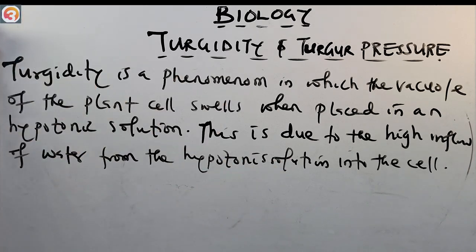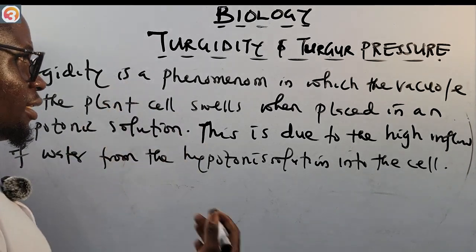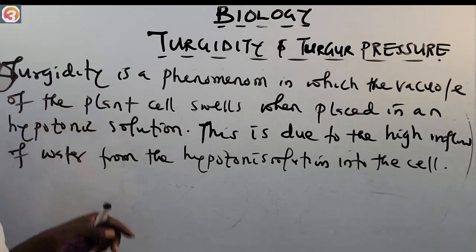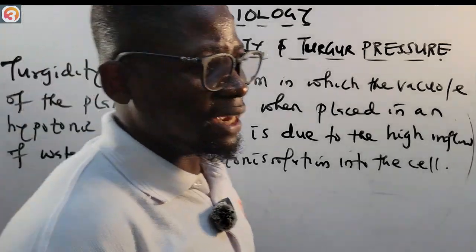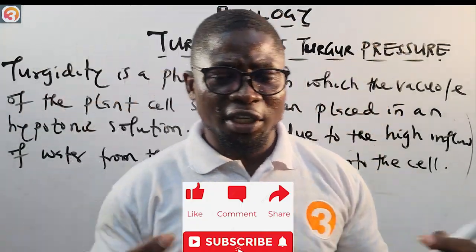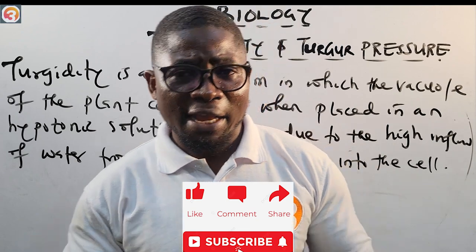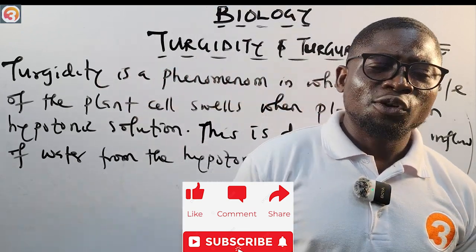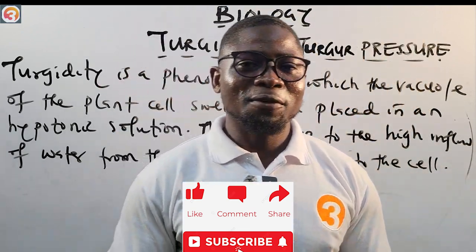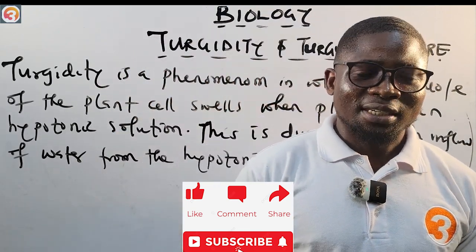So to summarize: we talked about types of membranes, turgidity, and turgor pressure. Once you know them, it becomes very easy. Please make sure you like the video, subscribe, and keep sharing. In the next episode, we'll talk about hemolysis, plasmolysis, and flaccidity. Thank you for watching and see you there.